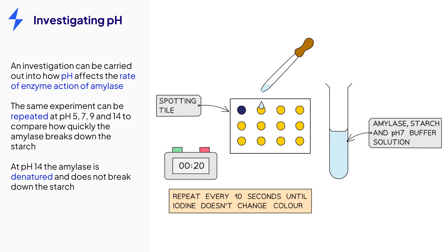10 seconds later, repeat this process and the iodine should turn blue-black again. Continue repeating every 10 seconds until the iodine no longer changes color. This will indicate when all of the starch has been broken down into maltose. At pH-7, this is 60 seconds.